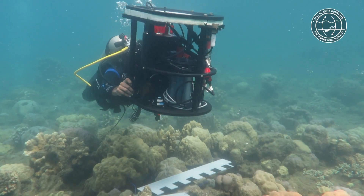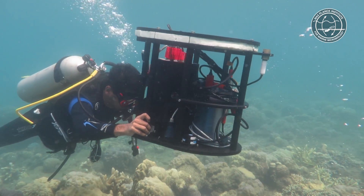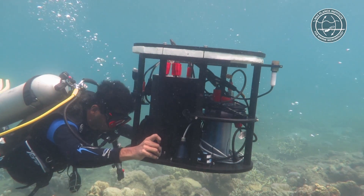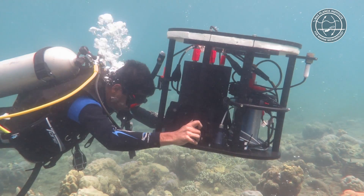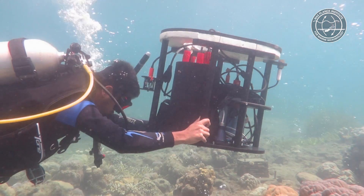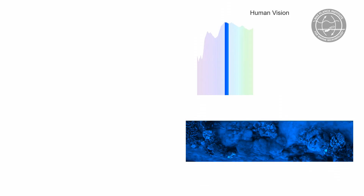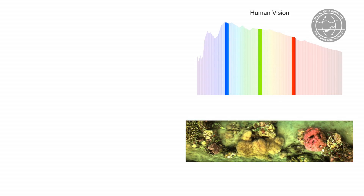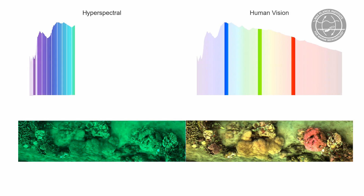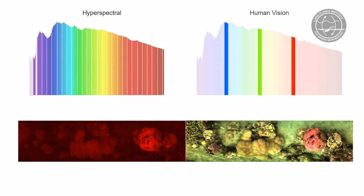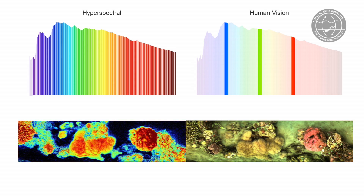A team of researchers at the Max Planck Institute has developed a new method to monitor reefs. They use so-called hyperspectral imaging — a way of capturing images from a particular target with greater spectral resolution than normal cameras can do. A normal camera captures essentially three wavelengths in red, green, and blue to simulate what the human eye can see. A hyperspectral image captures hundreds of wavelengths in the visible range, providing a much greater spectral resolution.